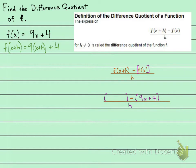Alright, so let's finish it. 9 times x plus h. That's going to be 9x. And then 9 times h is 9h. And drop down the plus 4.